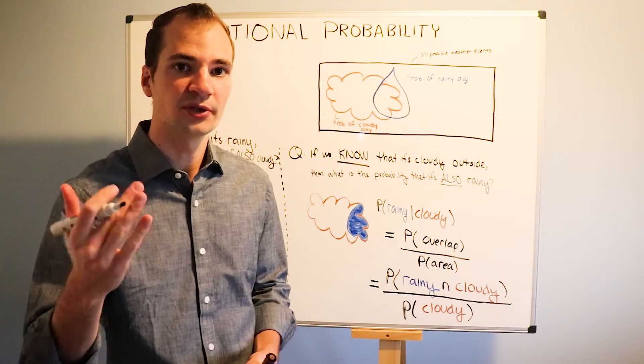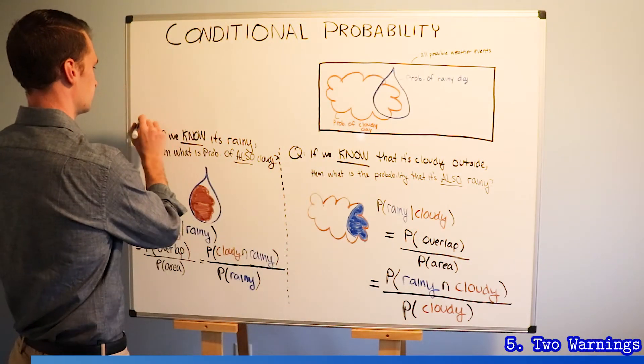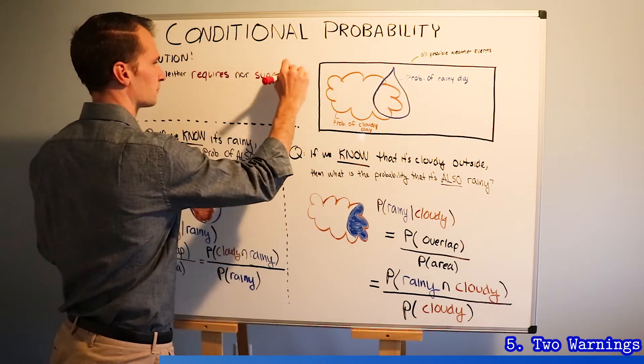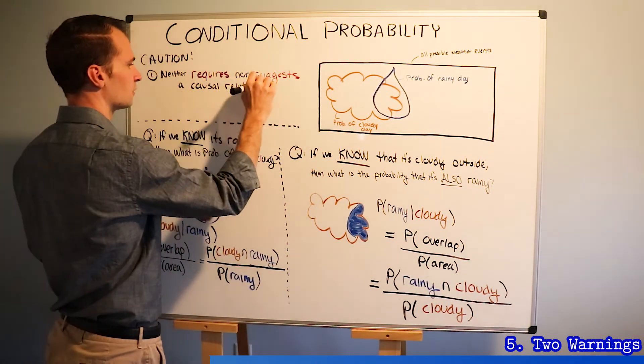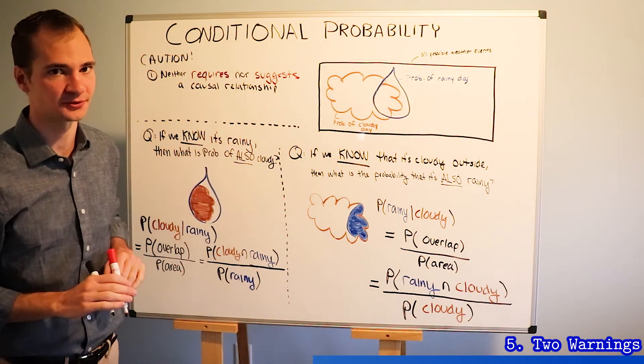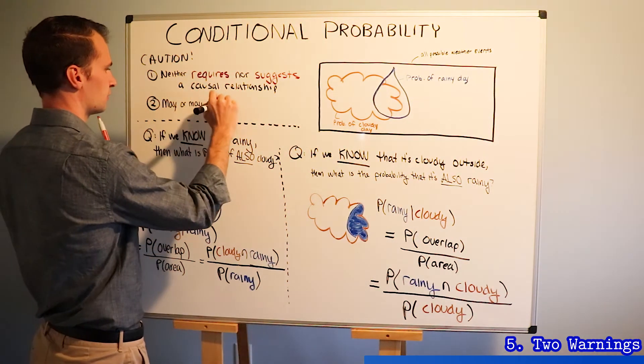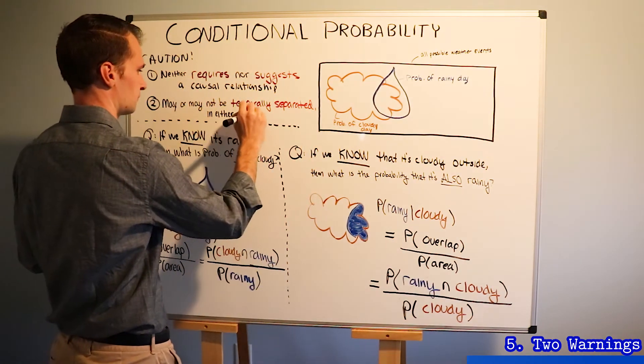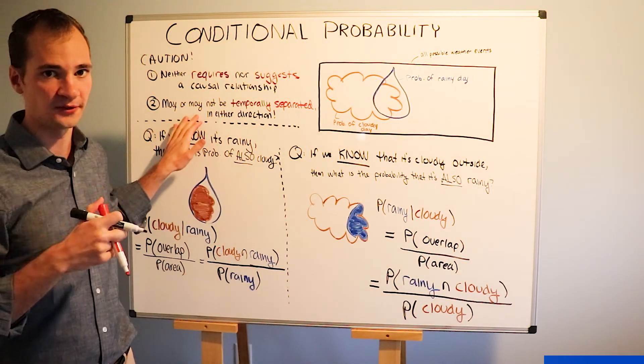And finally, two points of caution of conditional probability. The two events might have a causal relationship, but they're certainly not required nor suggested to have a causal relationship. And the second, one event may come before, at the same time, or after another. But that's simply not communicated in any of our calculations.